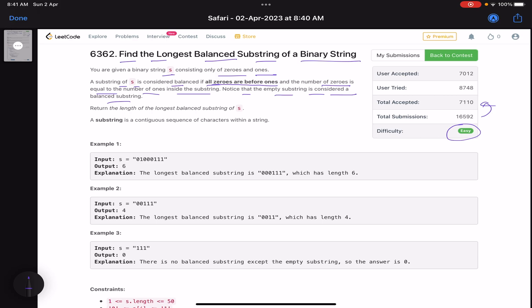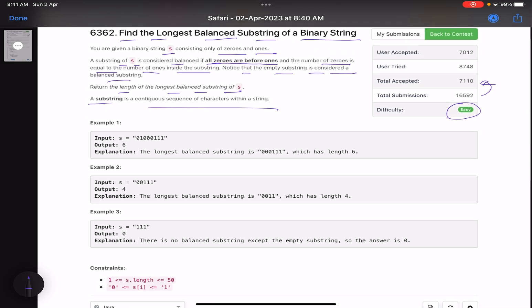Obviously because you have equal number of zeros and ones, and all the zeros are considered to be before one, so not violating any condition. Return the length of the longest balanced substring of S. A substring is a contiguous sequence of characters within the string.